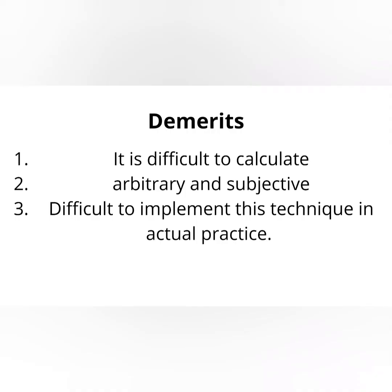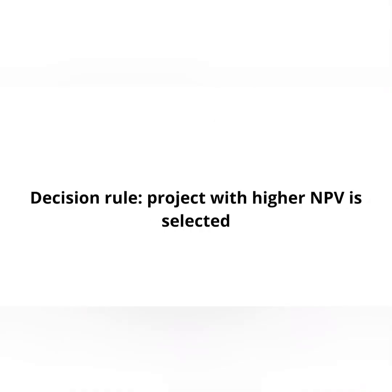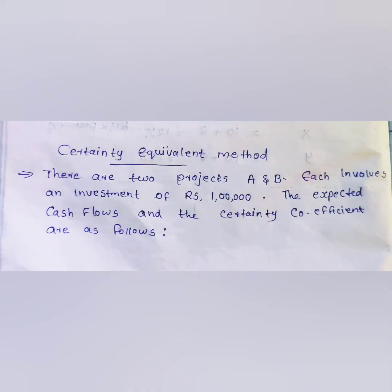The decision rule is: select the project with the higher NPV. The risk-adjusted discount rate and the certainty equivalent method both use net present value as the decision criterion. Theoretically, the first method is the Certainty Equivalent Method.